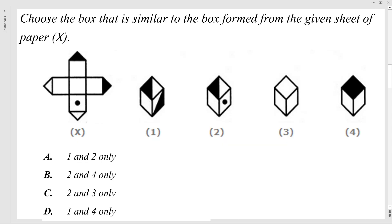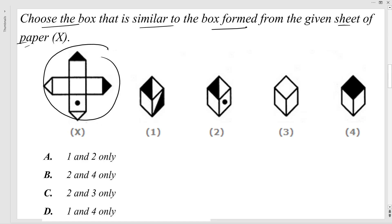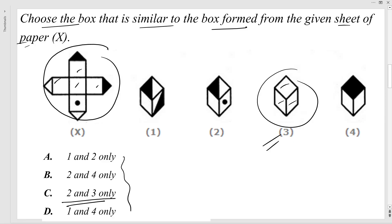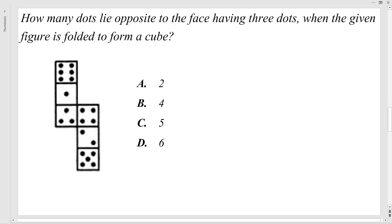The second question: choose the box that is similar to the box formed from the given sheet of paper X. If you see clearly, option C has 3 continuous faces which are attached and adjacent to each other. From the options, the third option shows 3, so this is the correct answer. If 3 was present in multiple options, you should check further and apply the elimination method — that is the fastest way to solve these questions.